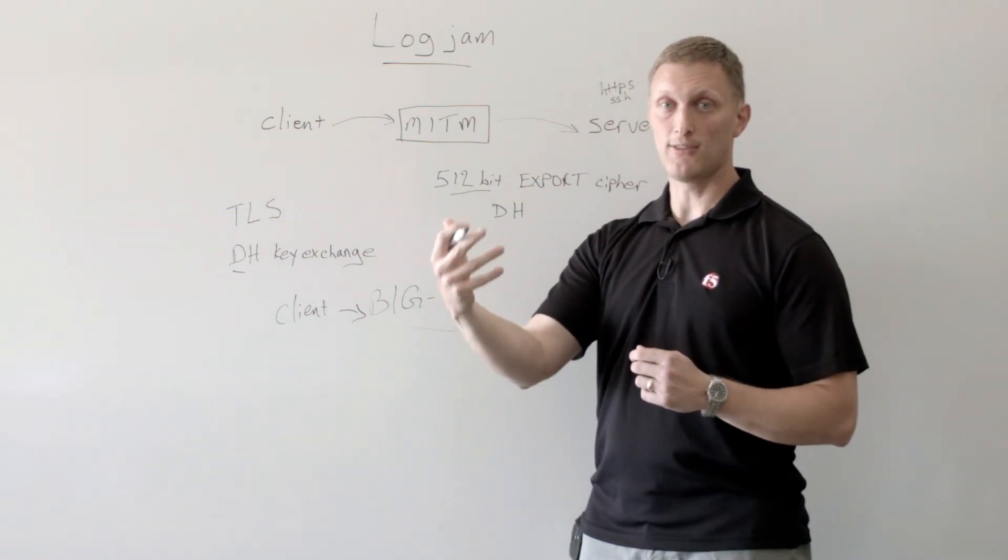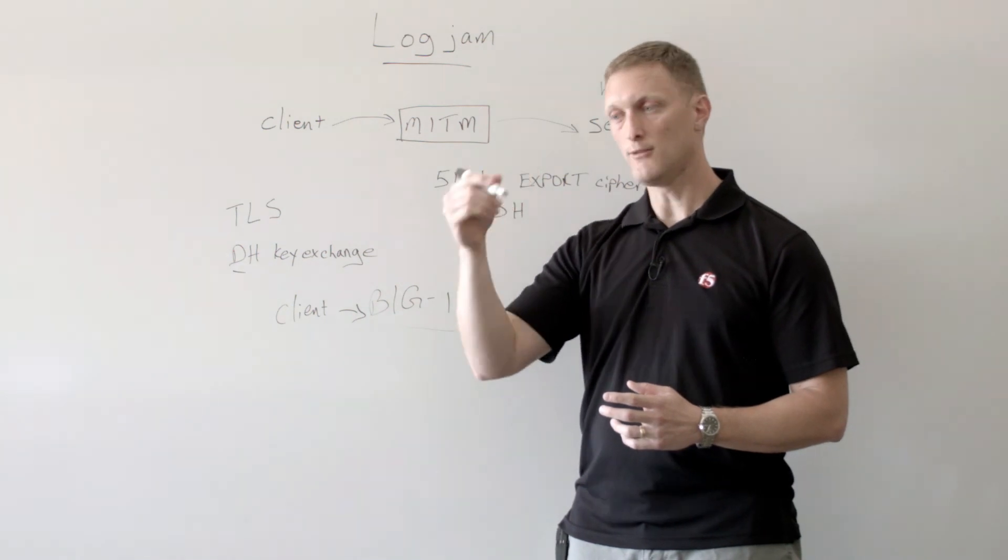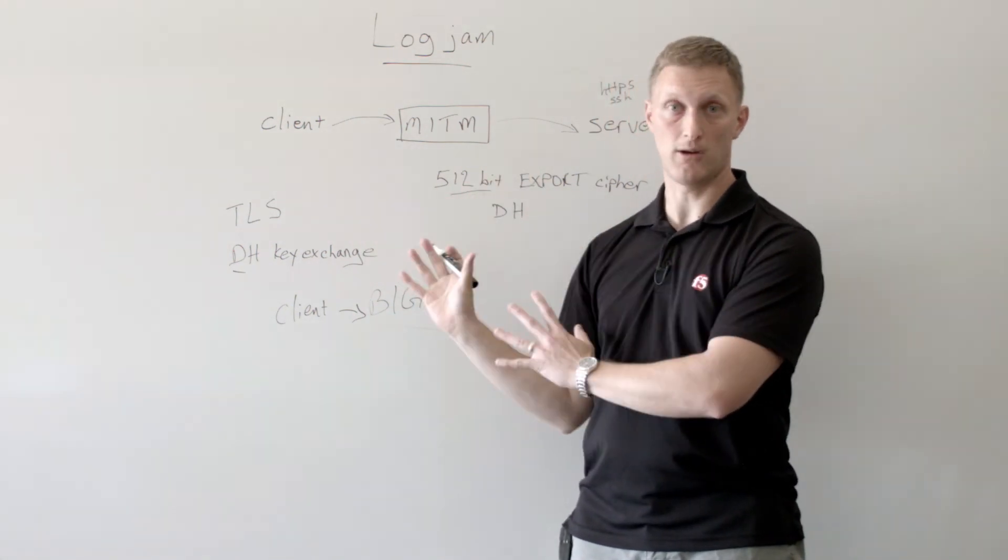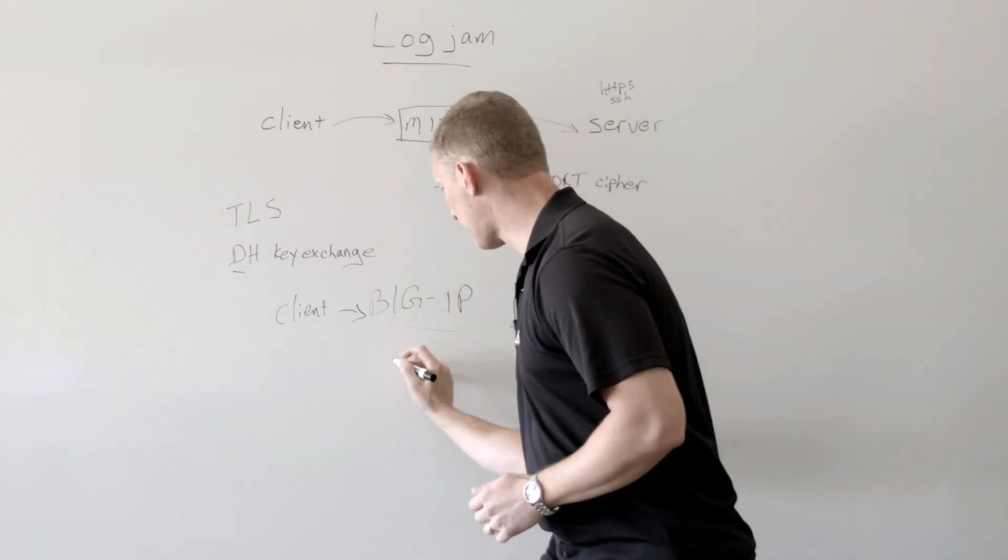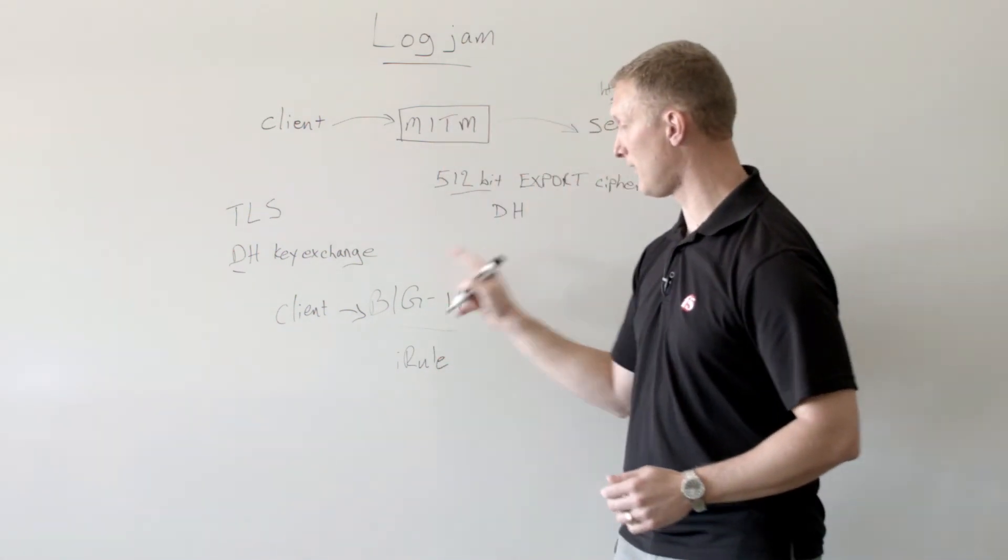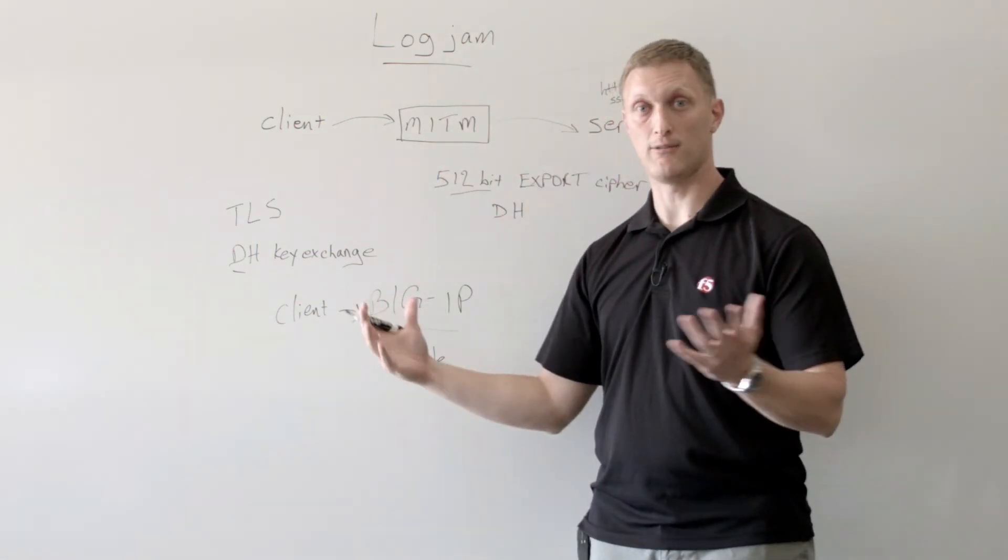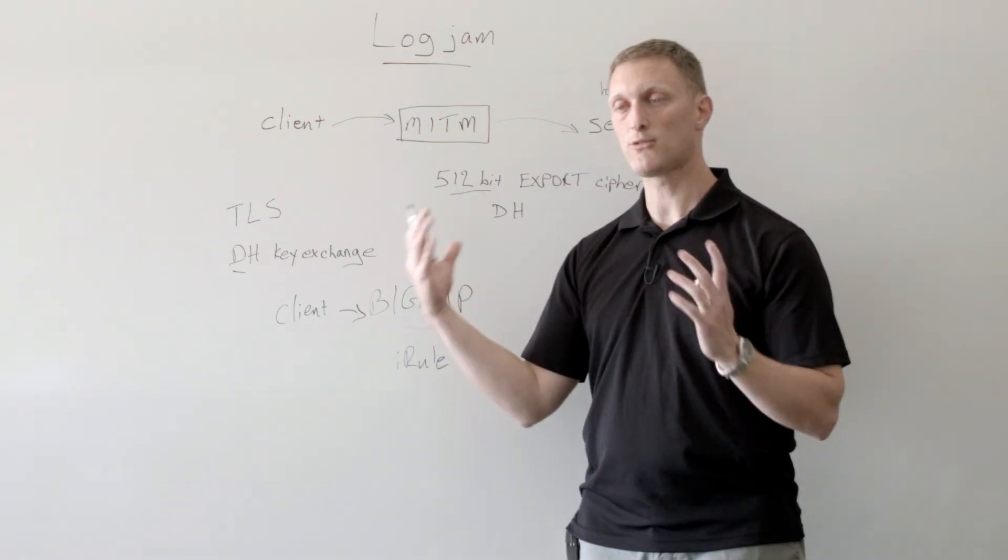In addition to that, there is a way, there's a setting on the Big IP where you can force a new Diffie-Hellman key for every single connection. And so that would also help with this. And then the last thing I'll write is this iRule, which that's one of the most powerful things about the Big IP and F5, is the programmability feature of this. And so that's really a cool thing.